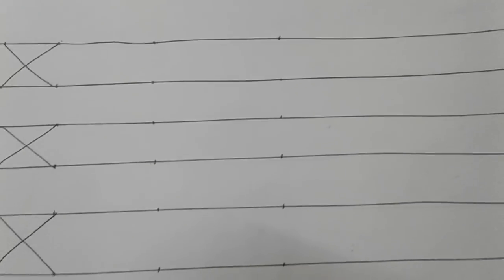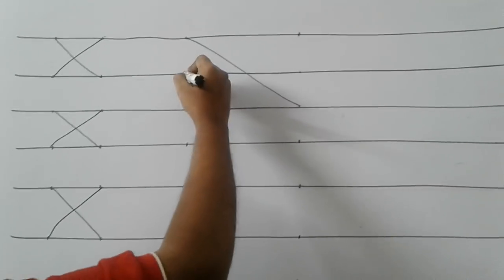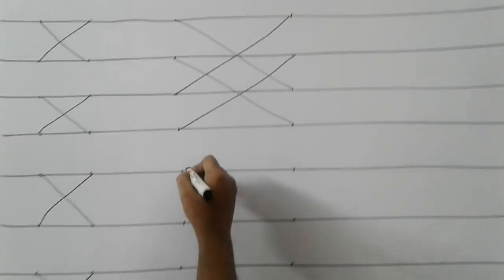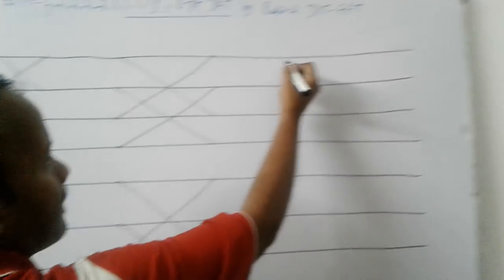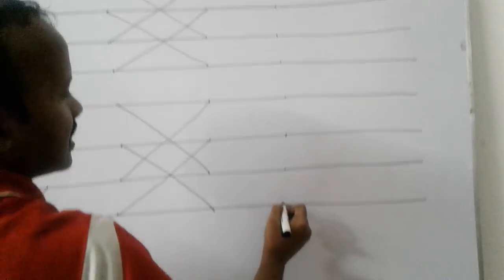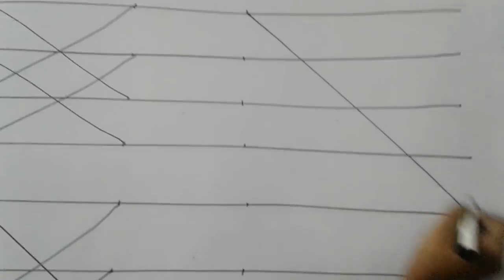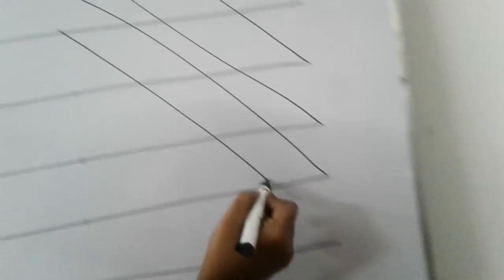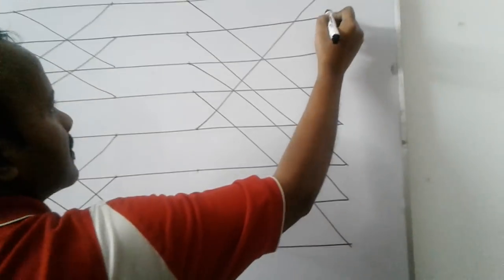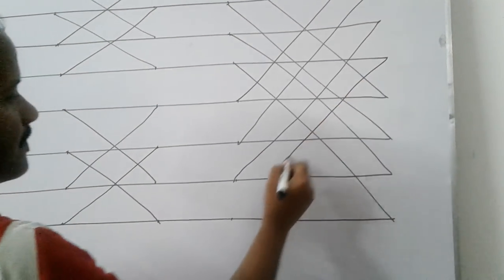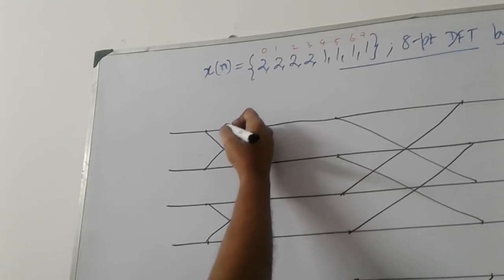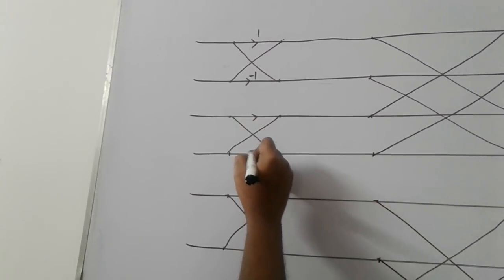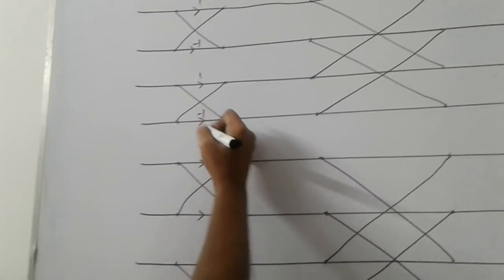Again 8 dots. This gap should be greater than this gap because this is 4 point DFT. 3 stages are there. 2 point DFT, 4 point DFT and 8 point DFT. After drawing 8 dots draw lines like this. The lines should terminate on the dots. 1 to 3, 2 to 4, 3 to 1, 4 to 2, 5 to 7, 6 to 8. Again the reverse side.